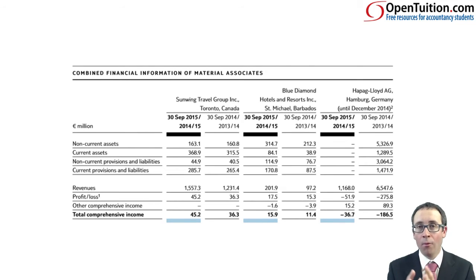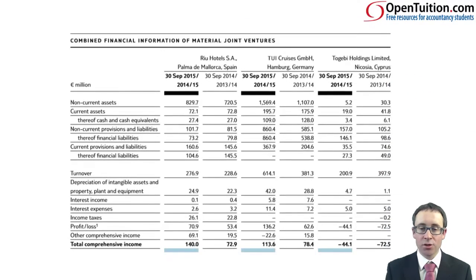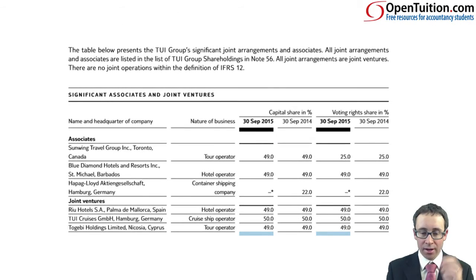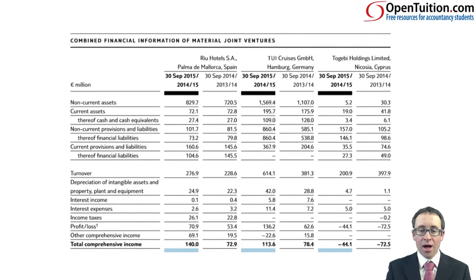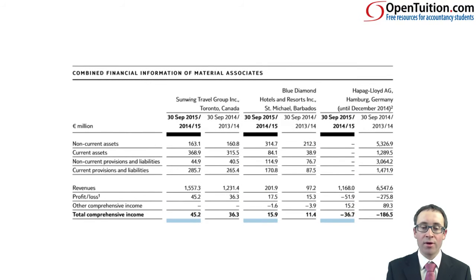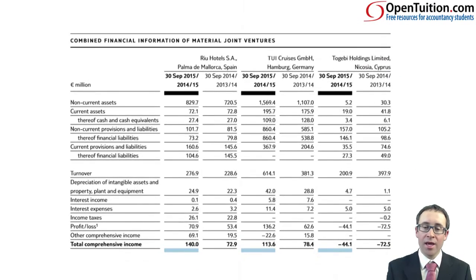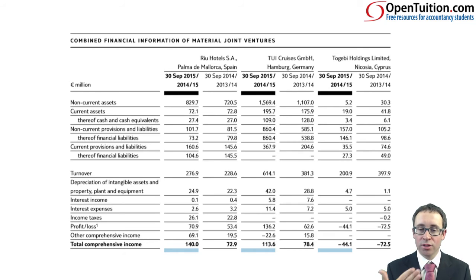Similarly, in terms of material joint ventures — Ryu Hotels, TUI Cruises, and Tugaby Holdings — there's a little bit more disclosure required, particularly with regards to profit or loss. Previously on associates, we just had revenue and profit or loss and OCI. Here on joint ventures, you have some more expense line items to help you judge a little bit more about the risks associated with that joint venture that you have joint control of.